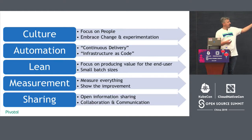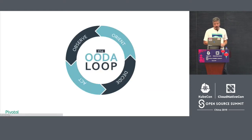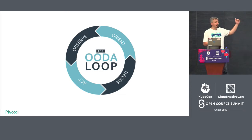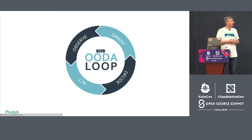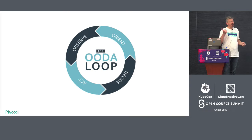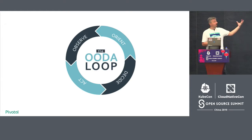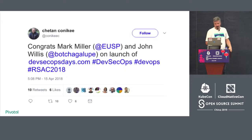John Willis and Damon Edwards coined the acronym CAMS — Culture, Automation, Measurement, and Sharing — and then Jez Humble added Lean to it, giving us the CALMS acronym. These are the things you need to focus on as you're doing DevOps to actually have good outcomes. When you follow the CALMS methodology, you create a feedback loop of continuous improvement — like the OODA loop: Observe, Orient, Decide, and Act. Automation, measurement, and sharing map into this loop, and lean techniques help build this constantly self-improving feedback loop.